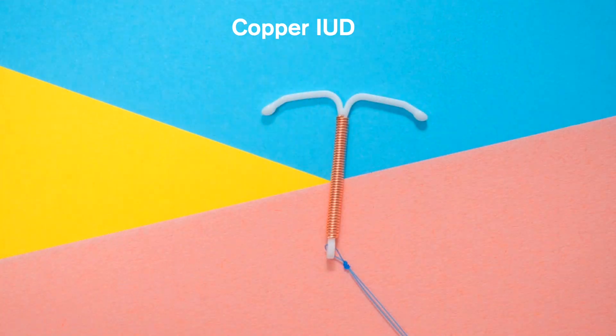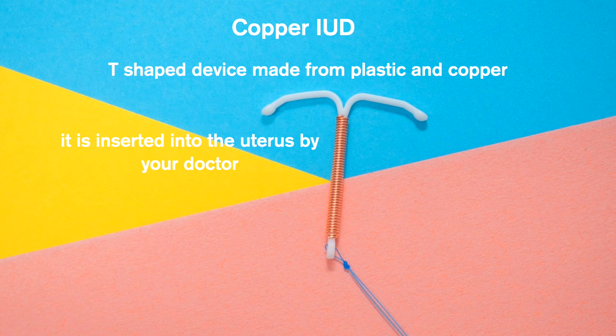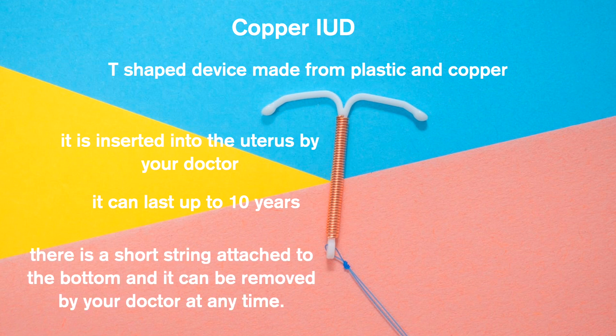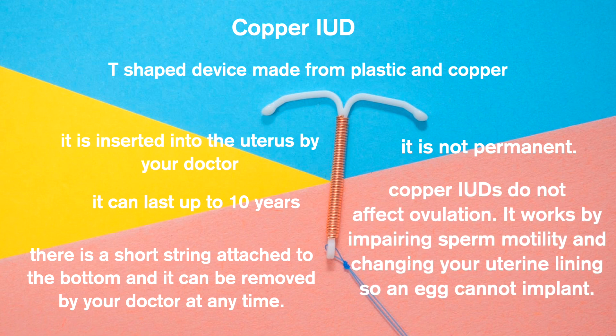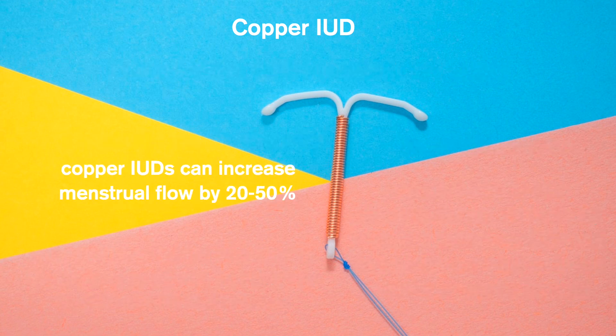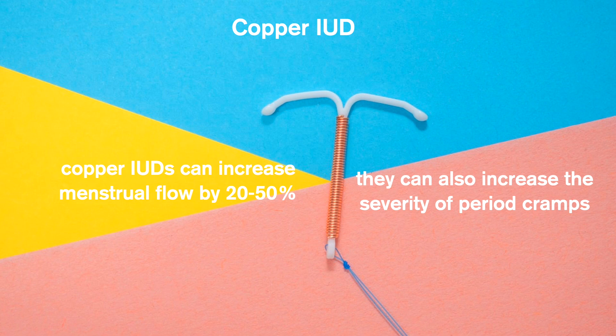The next method of non-hormonal birth control is a copper IUD. A copper IUD is a T-shaped device usually made from plastic and copper, and it is inserted into the uterus by your doctor. Once inserted, it can last for up to 10 years, and there is a little string attached so you can have it removed at any time — it is not permanent. Copper IUDs do not affect ovulation; instead, they work by impairing sperm motility and changing your uterine lining so an egg cannot implant. It's important to note that copper IUDs can increase menstrual flow by 20–50% and may increase period cramping, so if you have a heavy flow or very painful periods, a copper IUD might not be right for you.